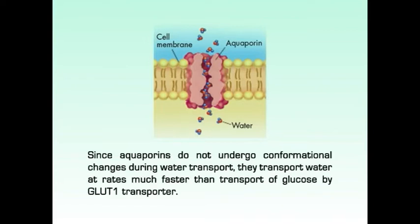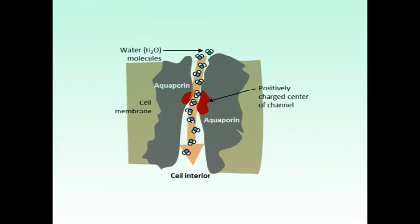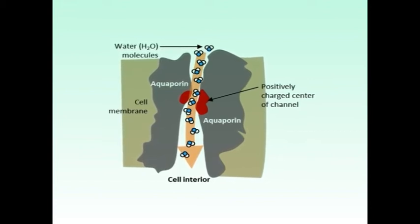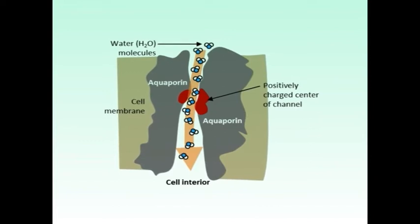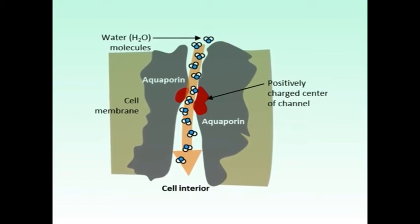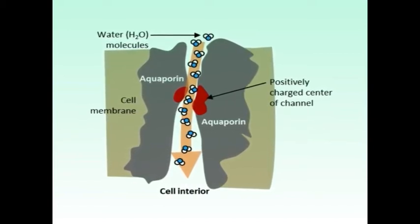Since aquaporins do not undergo any conformational changes during water transport, they transport water at rates much faster than transport of glucose by the GLUT1 transporter. The formation of hydrogen bonds between the water molecule and the channel lining amino acids ensures that only uncharged water passes through the channel. As shown in this diagram, the orientation of the water molecules in the channel prevents the net movement of protons through the channel. As a consequence, ionic gradients are maintained across membranes even when water is flowing through them via aquaporins.